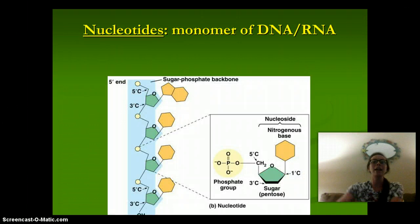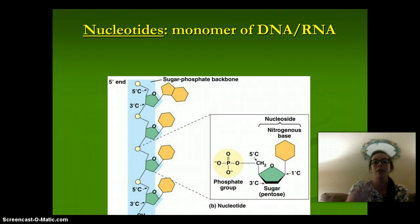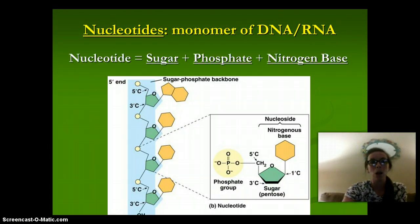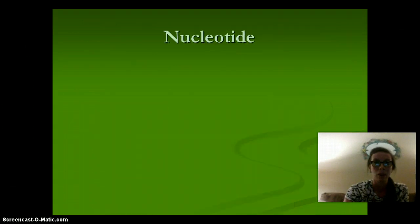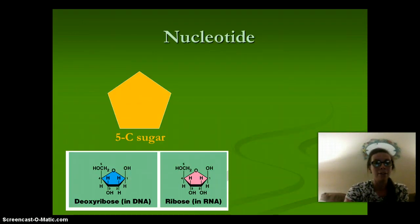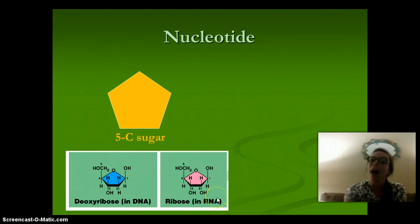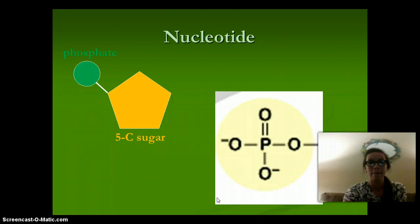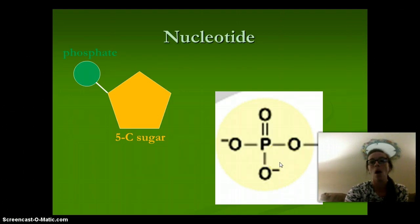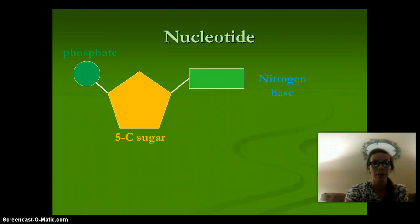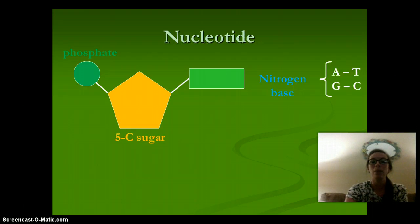The nucleotide is going to be the monomer of both DNA and RNA, and it's made of three parts: sugar, plus a phosphate, plus a nitrogen base. We have a five-carbon sugar — deoxyribose in DNA and ribose in RNA — and the phosphate group from the functional groups we talked about in the carbon lecture. And then we have our nitrogen base.